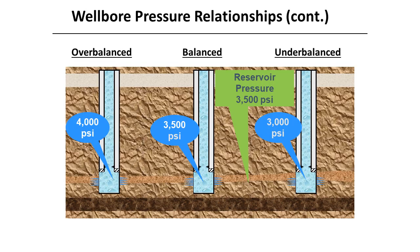This chart shows an example of wellbore pressure relationships. If we have reservoir pressure of 3,500 psi: the well will be overbalanced if wellbore pressure is 4,000 psi; the well will be balanced if the wellbore pressure is 3,500 psi; and the well is underbalanced if the wellbore pressure is 3,000 psi.